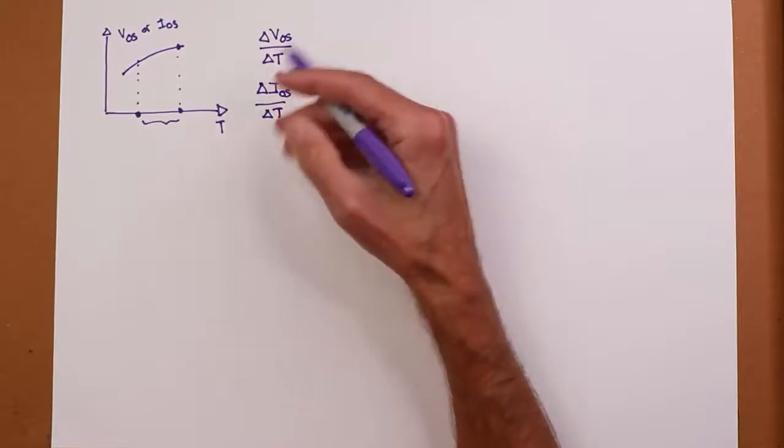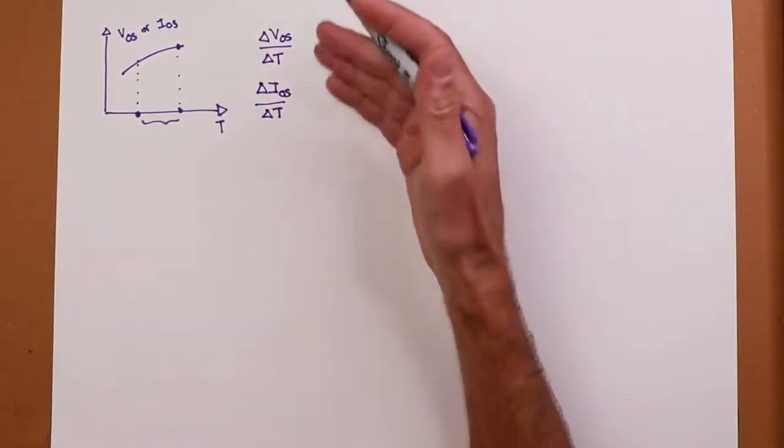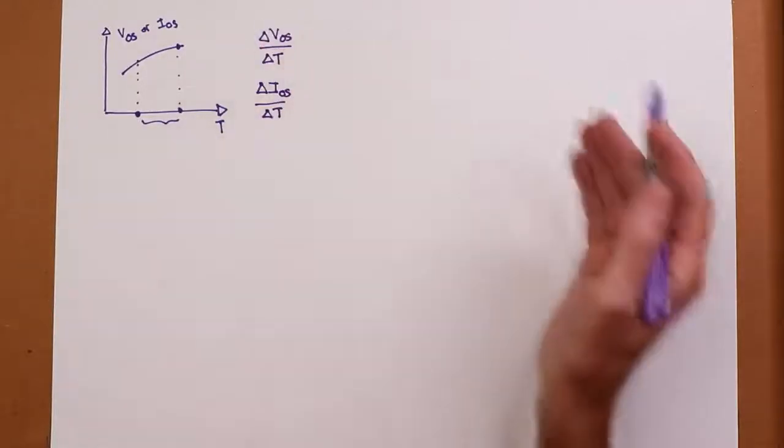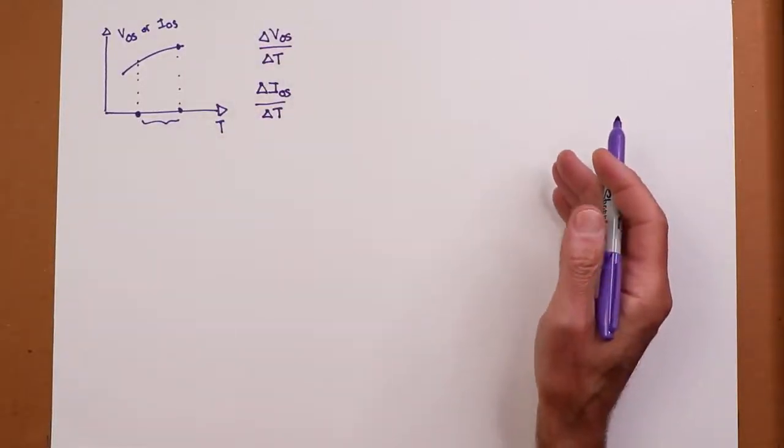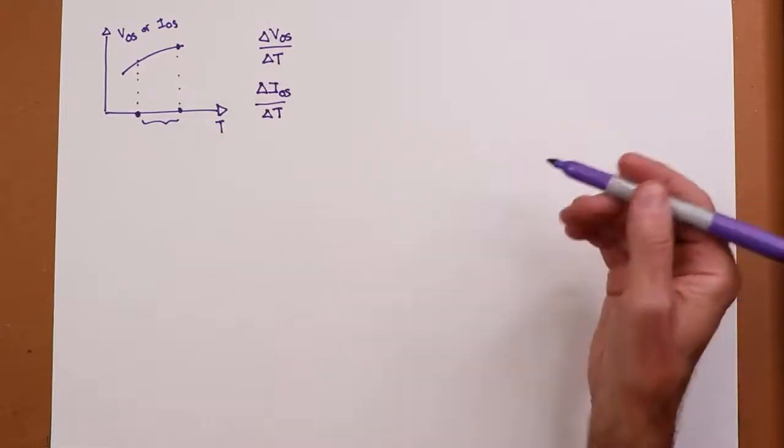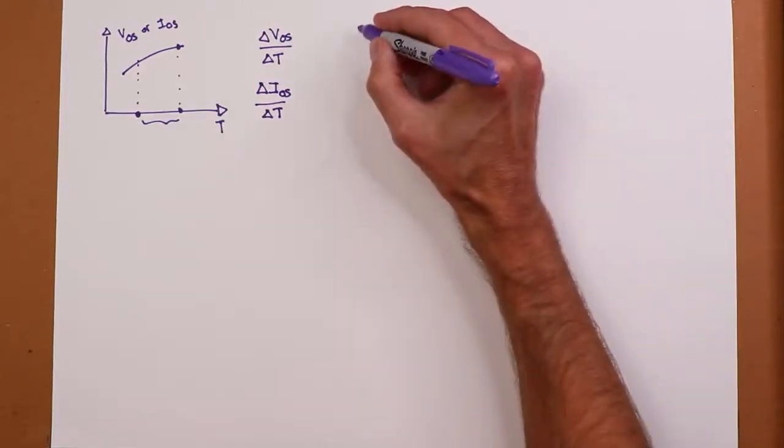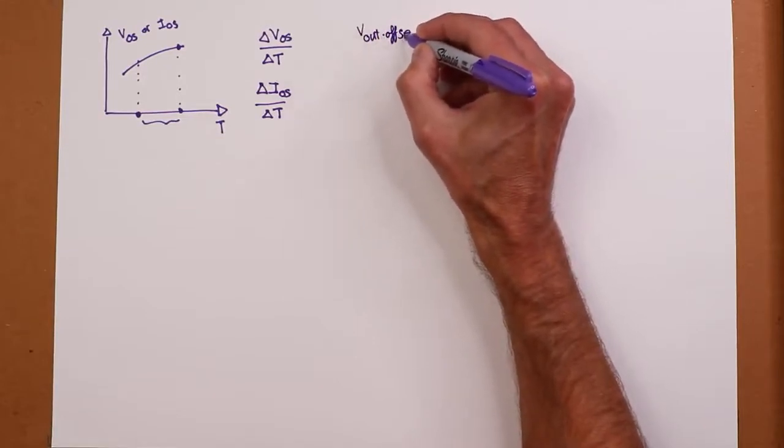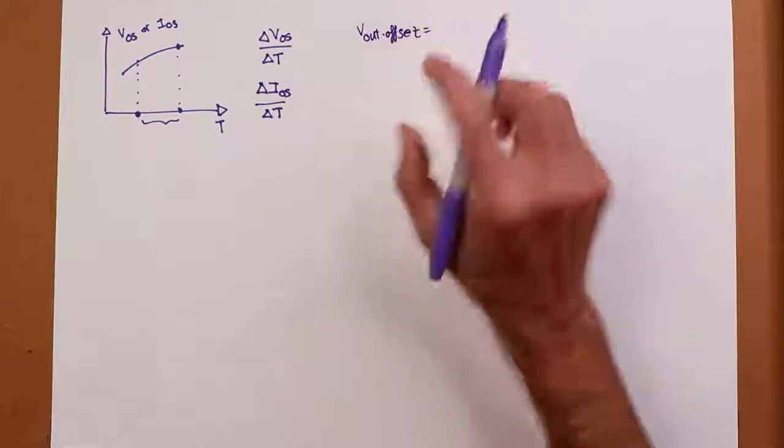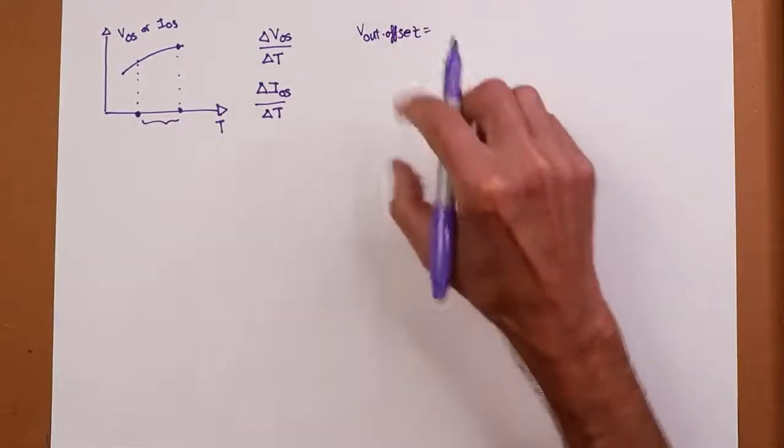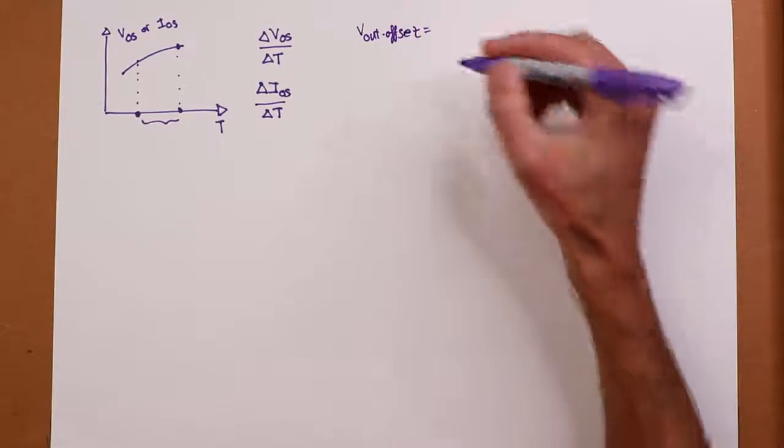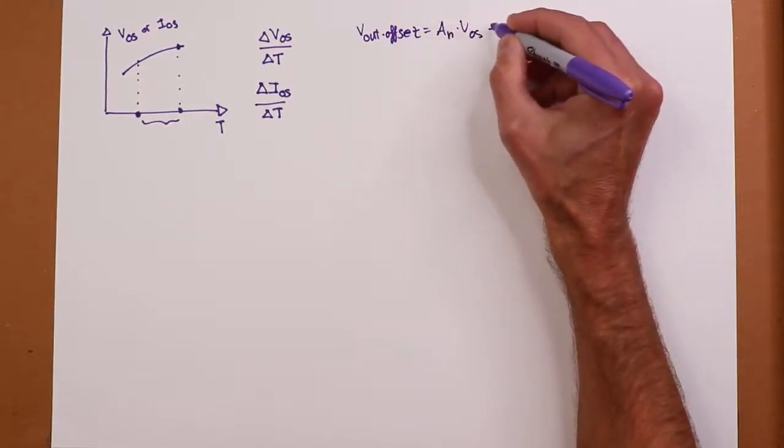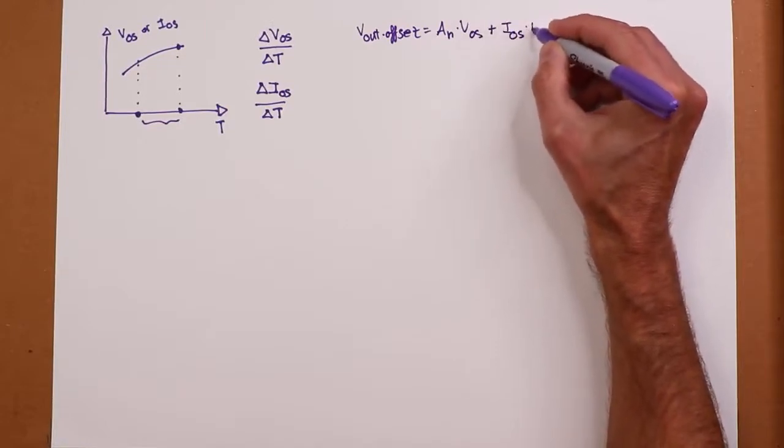So they give this to us, and we'll have units that will be, ultimately, volts per centigrade degree, amps per centigrade degree. Now if we take our original equation, our original offset equation, and again this assumes that we had the R-offset value in there and everything was nicely balanced with resistance, and we basically had an equation that looked like this: A_noise times V_OS plus I_OS times R_F.